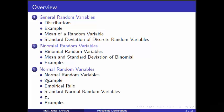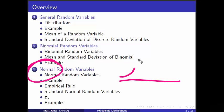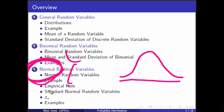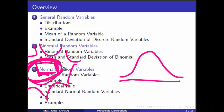Normal random variables are also very natural. These are the random variables that are sort of mound-shaped. They are very specifically mound-shaped — the canonical mound-shaped or bell-shaped random variables. When people talk about bell-shaped random variables, they mean these ones, the normal ones. So we're finally going to formalize that a little bit.